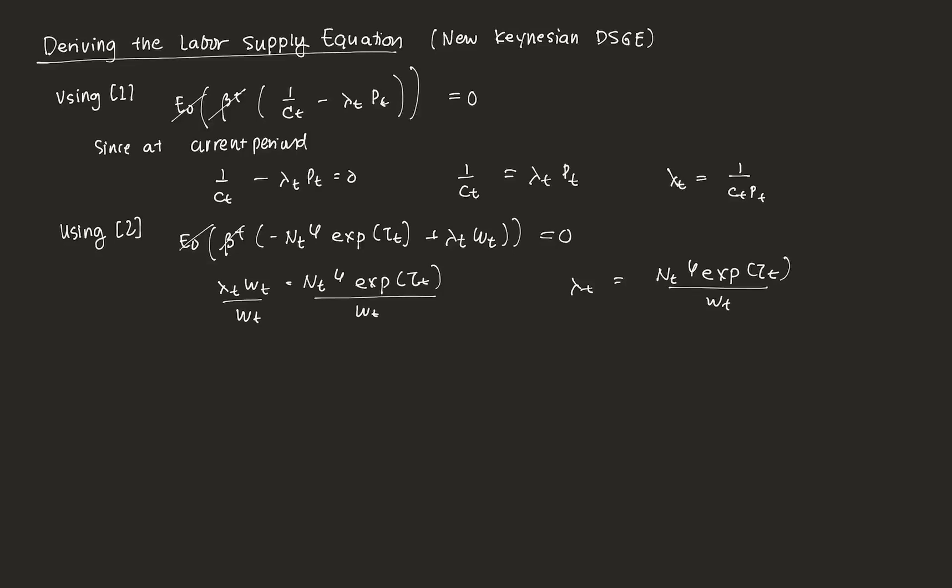Now we equate lambda equals lambda. So 1/(c_t*p_t) = (n_t^phi * exp(preference shock))/w_t. We rearrange a bit by moving w_t to the left side and multiplying both sides by c_t. This gives us w_t/p_t = exp(preference shock) * c_t * n_t^phi, and that is our labor supply function, our labor supply behavior.